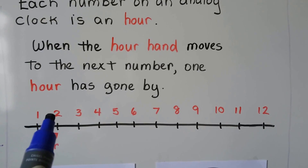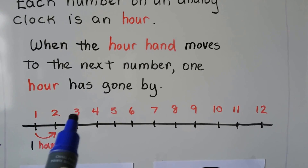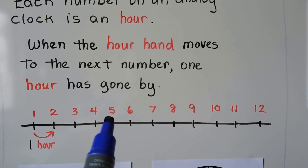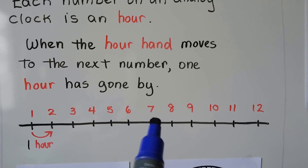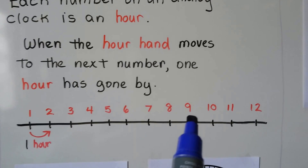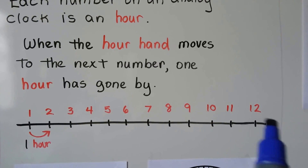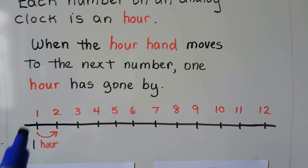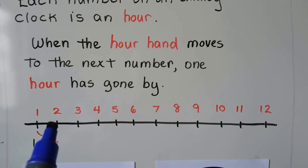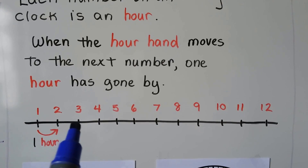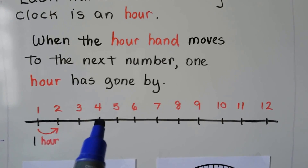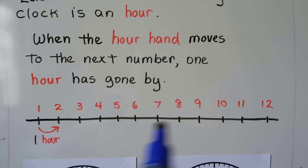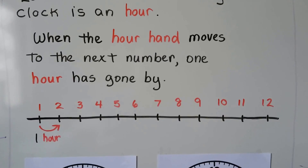One, two, three, four, five, six, seven, eight, nine, ten, eleven, twelve. Each of these hours would be o'clock: one o'clock, two o'clock, three o'clock, four o'clock, and so on.